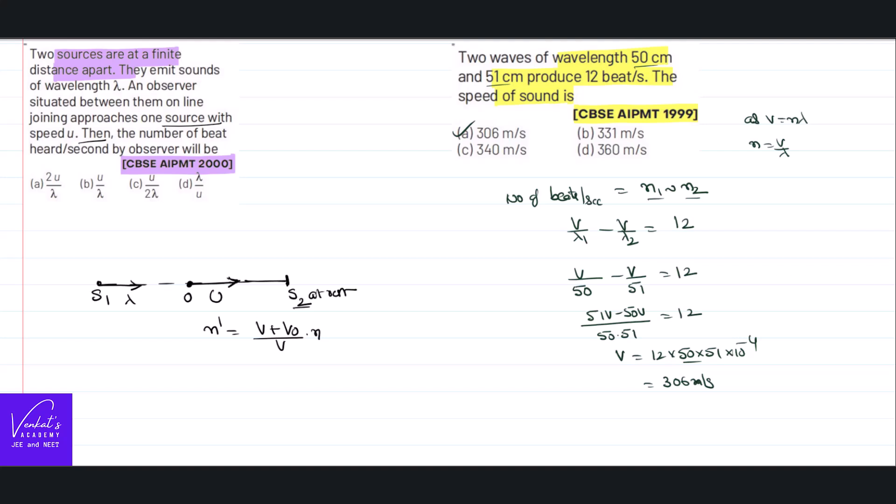He is going away from this first source. As he is approaching the second source, he's obviously going away from the first source. Frequency heard from the first source n double dash. Due to this n dash, due to this n double dash, is as he is moving away from the source.